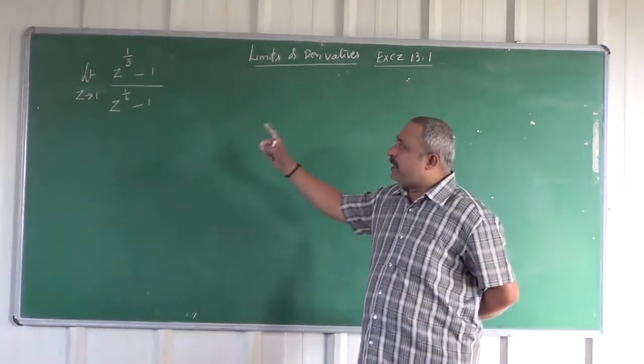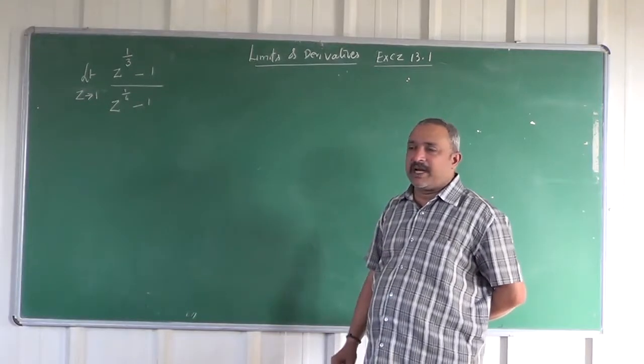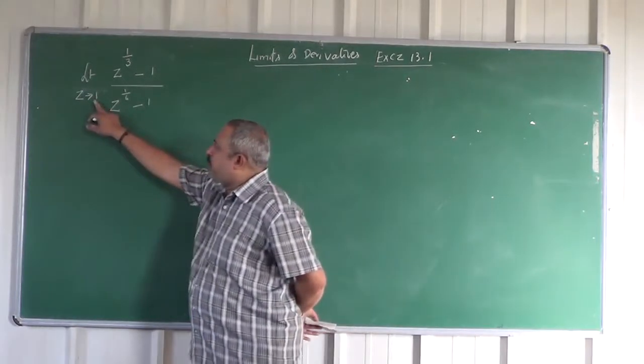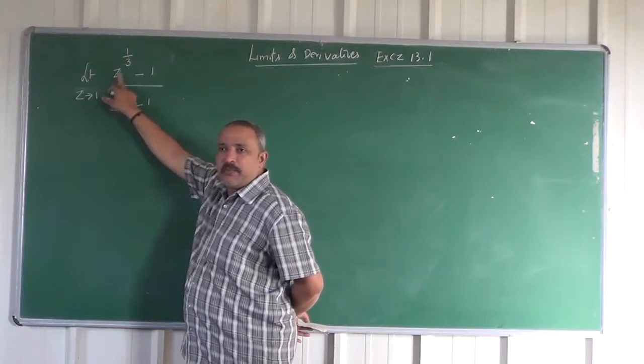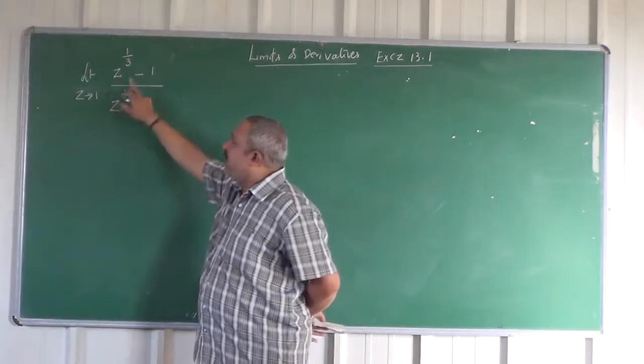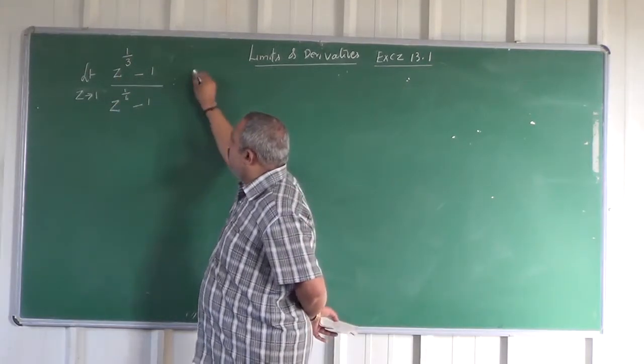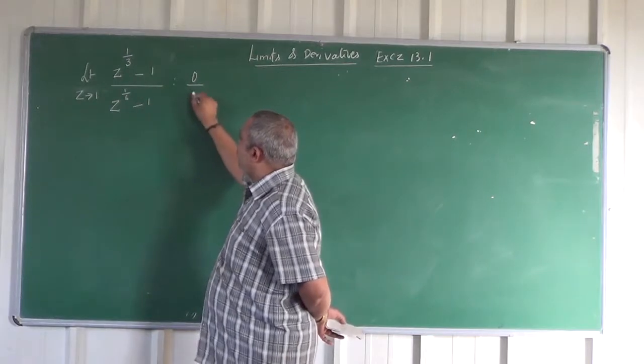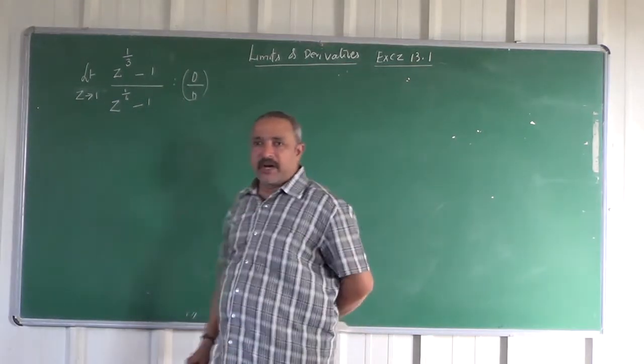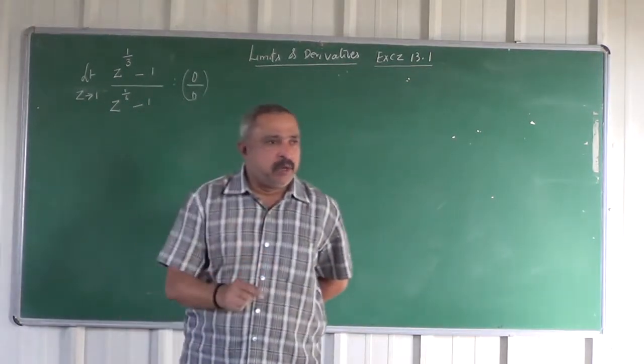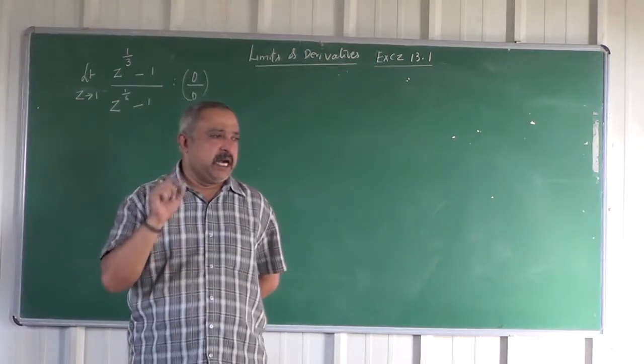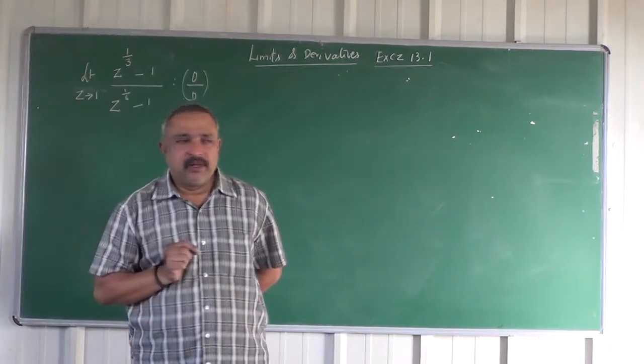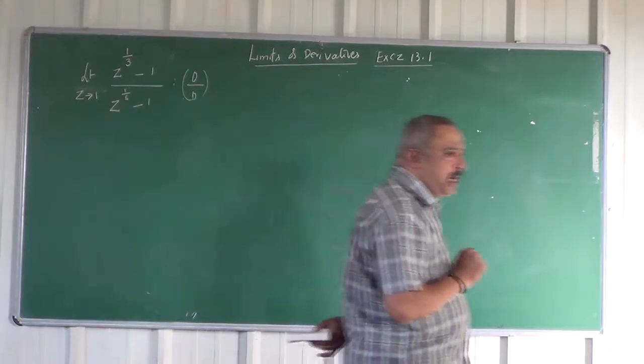The first step is to apply the limit directly and check what happens. If you put Z as 1, 1 to the power of 1 by 3 is 1 only, 1 minus 1 is 0. The denominator is also 0. So right now the given problem is in indeterminate form. Now you need to remove the indeterminate form.